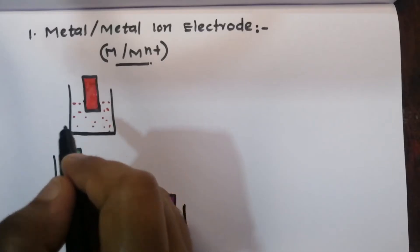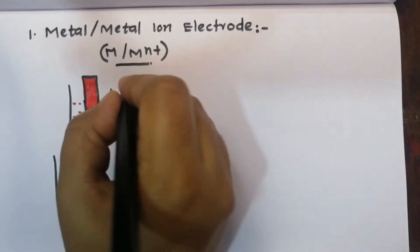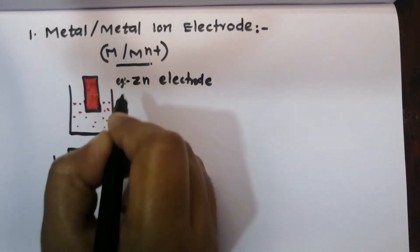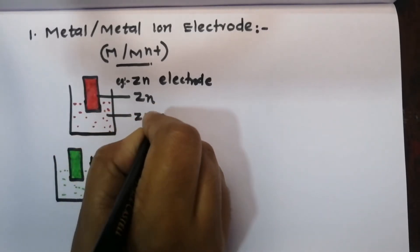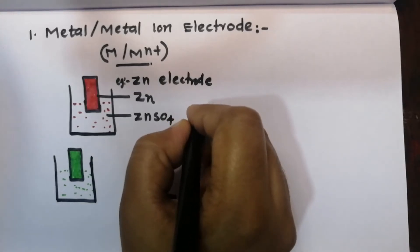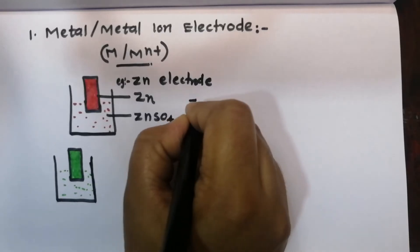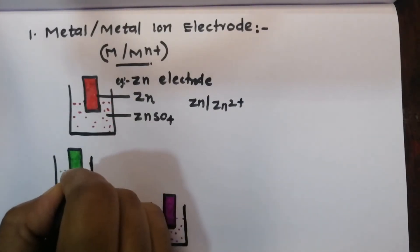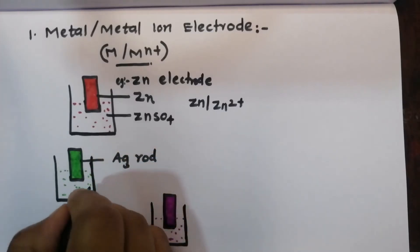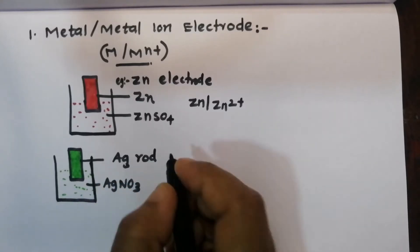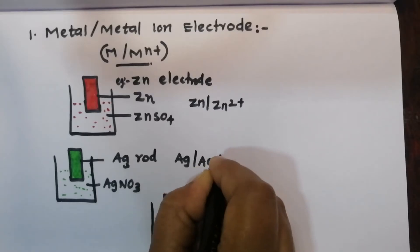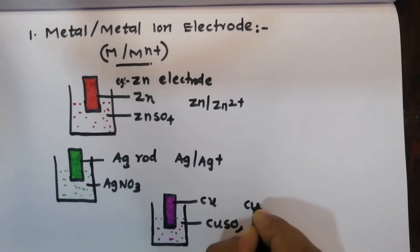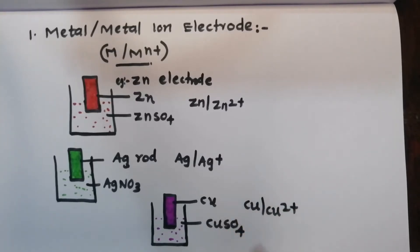For metal/metal-ion electrodes, a metal is immersed in its respective metal salt solution. For example, a zinc electrode dipped in zinc sulfate solution gives us Zn | Zn²⁺. Another example is a silver electrode dipped in AgNO₃ solution, giving Ag | Ag⁺ as the metal electrode.